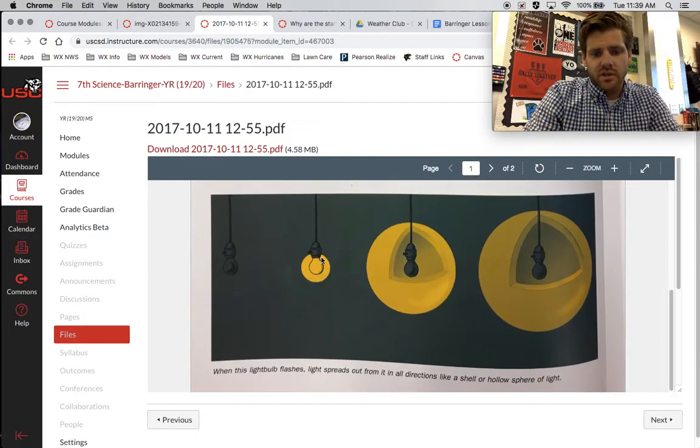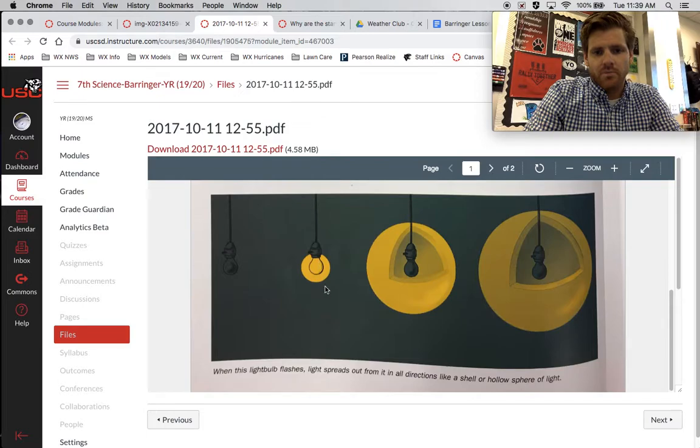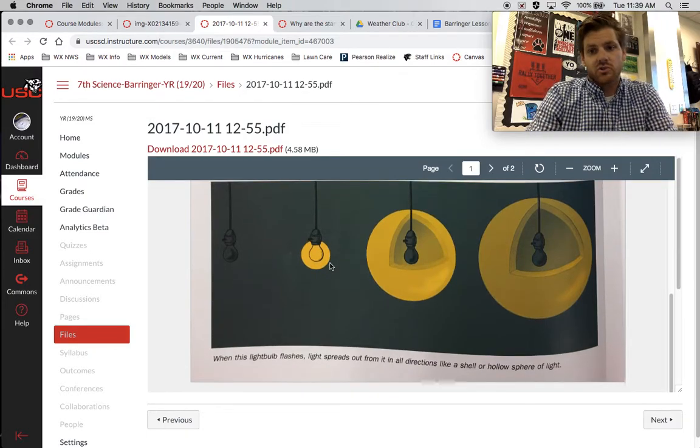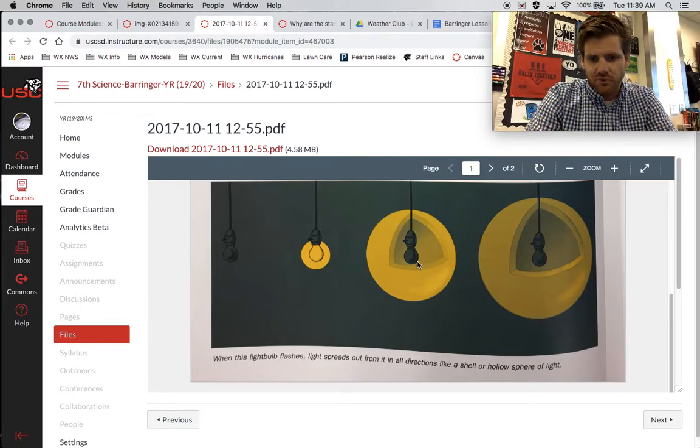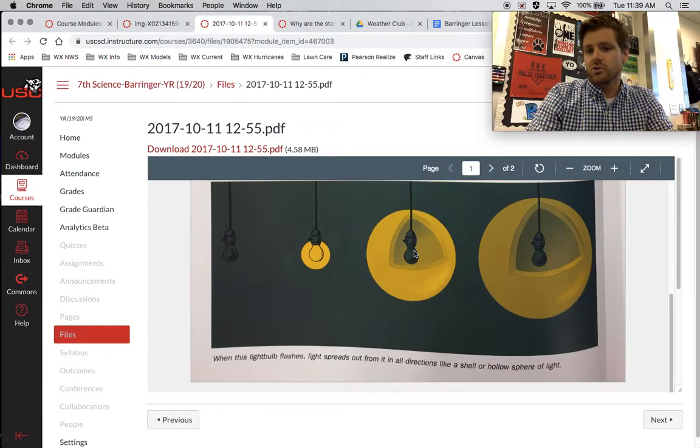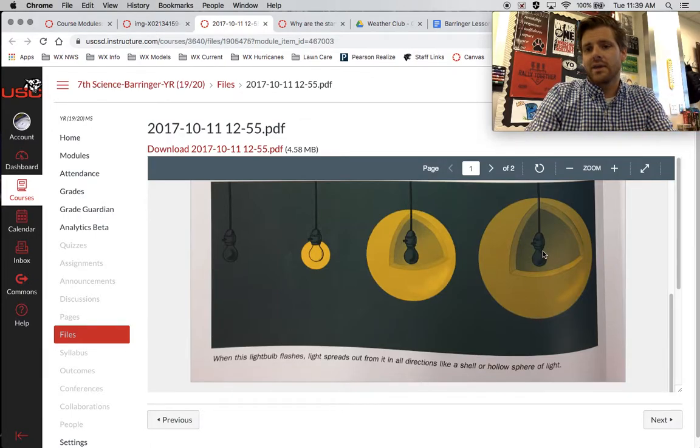So we can see, check this out, that as a light bulb, light spreads out in all directions. It goes in a straight line, but it spreads out in all directions. Notice how every single time the light gets a little bit further, what happens to the brightness? It gets dimmer. It covers a larger area and it gets dimmer.